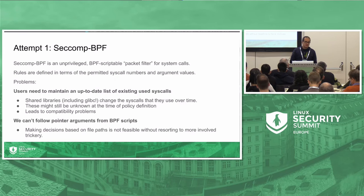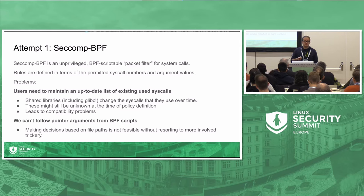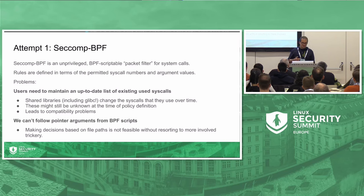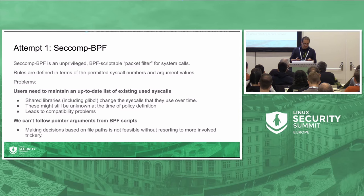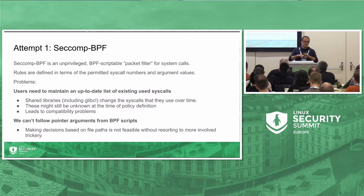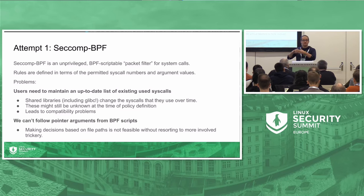One of the first things I attempted was to use seccomp BPF. It's an unprivileged mechanism where you can load a BPF filter into the kernel and the kernel enforces it for the current process and its children — it runs like a packet filter, filtering the system calls that the user space process makes. Unfortunately it has some drawbacks: you can't follow pointer arguments like file paths into an open syscall, because the filter doesn't have access to user space memory.